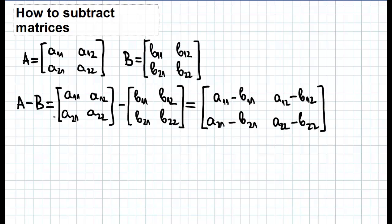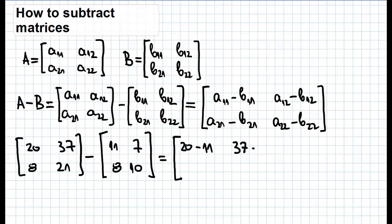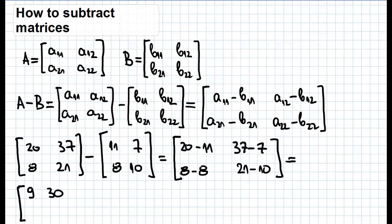Let's try to do this now with some numbers. Let the first matrix consist of the numbers 20, 37, 8, and 21, and the second matrix consist of the elements 11, 7, 8, and 10. Now to subtract these two matrices we write 20 minus 11, 37 minus 7, 8 minus 8, and 21 minus 10. This gives us the matrix: 20 minus 11 is 9, 37 minus 7 is 30, 8 minus 8 is 0, and 21 minus 10 is 11.